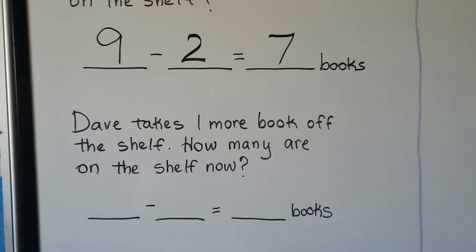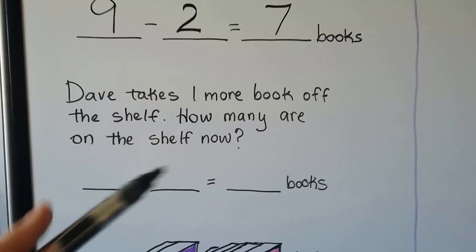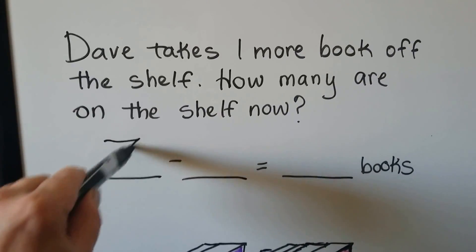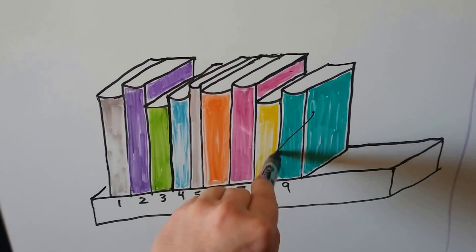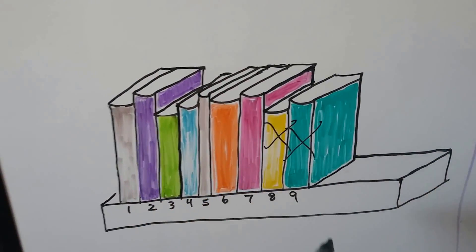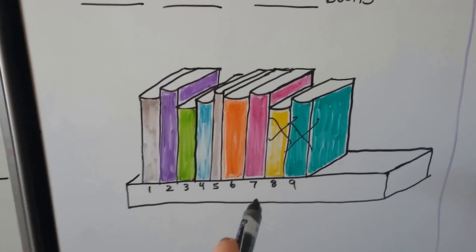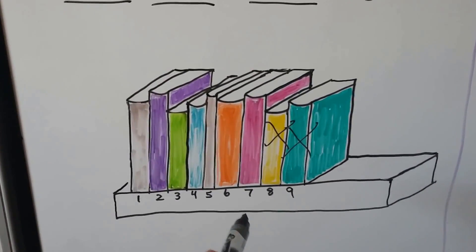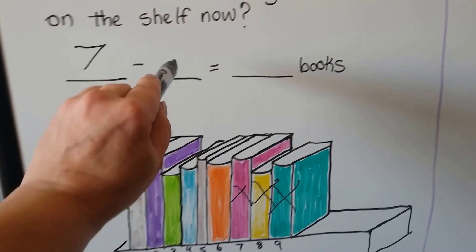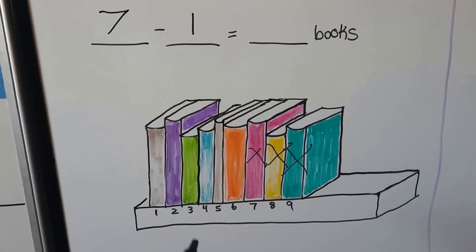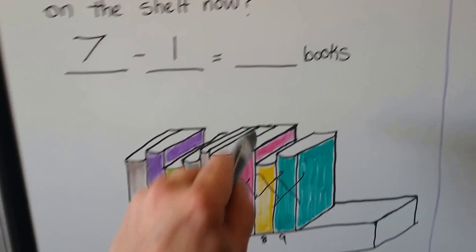Dave takes 1 more book off of the shelf. How many are on the shelf now? He had 7 — the green one and the yellow one are gone. If he takes 1 more book off the shelf, we're going to have 7 minus 1. How many books are on the shelf? We're at 6. 6 books.